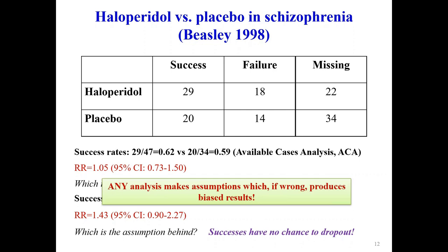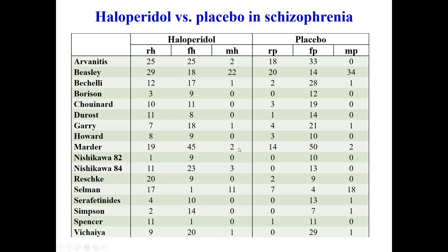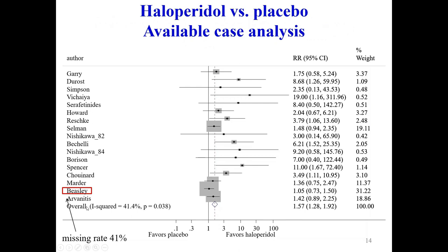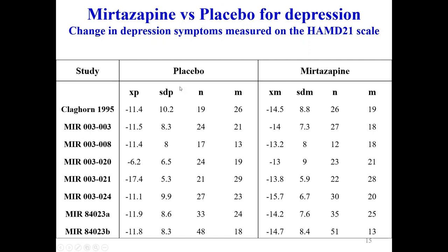Any analysis makes assumptions which, if wrong, produce biased results. Here are the 17 trials of haloperidol versus placebo — three columns per group: R for successes, F for failures, M for missing participants. One study, the Bisley study, has large missing rates, and peculiarly it has the largest weight, accounting for almost 30% of the meta-analysis, while also having the smallest effect size.